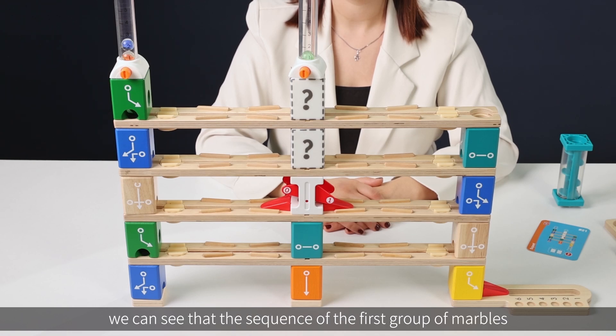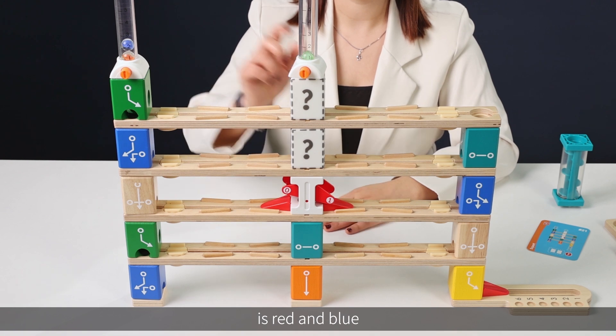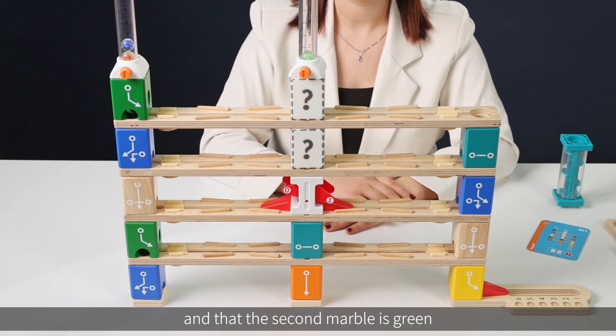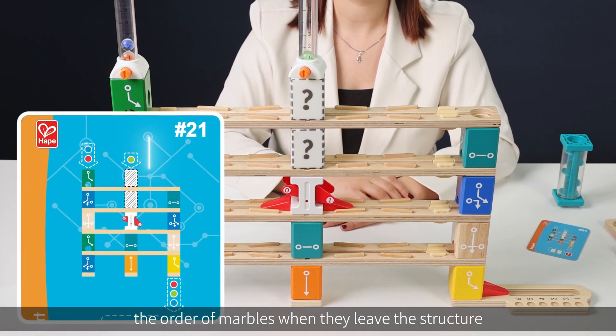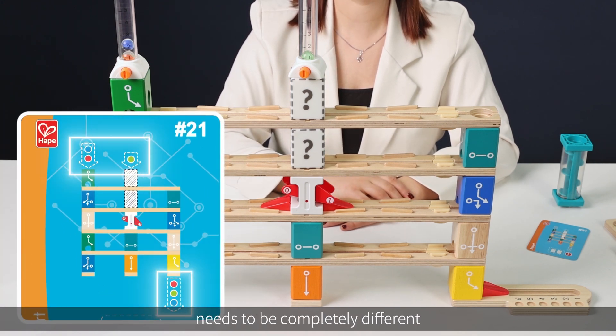By looking at the card we can see that the sequence of the first group of marbles is red and blue and that the second marble is green. However the order of marbles when they leave the structure needs to be completely different.